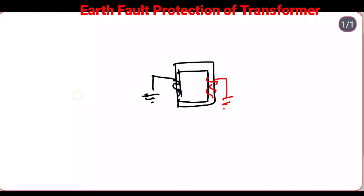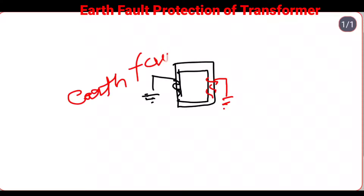It is better to use earth fault relays in order to ensure the disconnection of the earth fault or leakage in the early stage. We are using earth fault relays. Before this fault becomes a very dangerous fault — a short circuit fault in the transformer — we use earth fault relays. What is earth fault protection? We can see now.